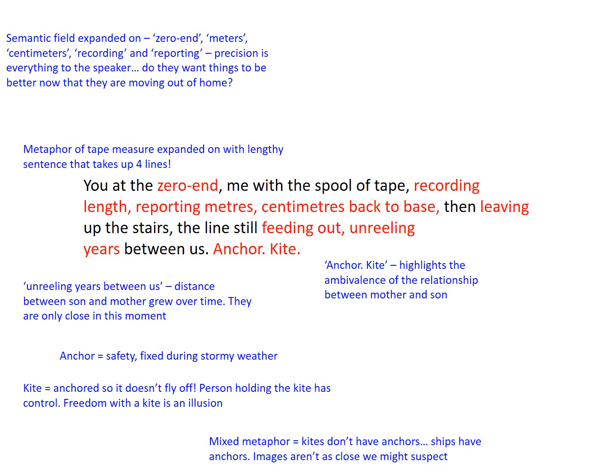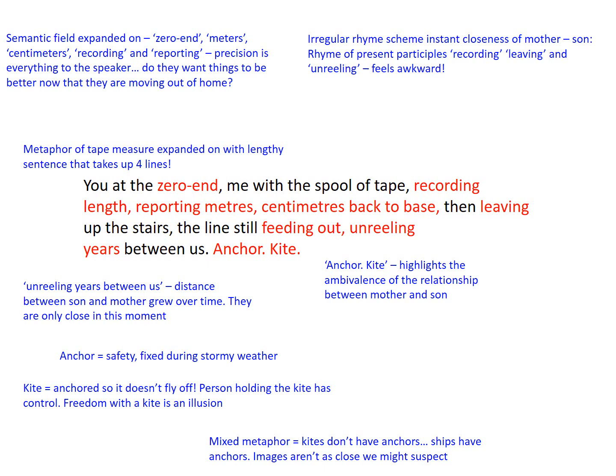There's an irregular rhyme scheme that feels immediately uncomfortable, mirroring the sense that we might presume they're close but they're not. The present participles — 'recording,' 'leaving,' 'unreeling' — feel awkward and clunky, perhaps how their relationship feels too. By the end of stanza two there's discomfort with the double end stop: 'Anchor. Kite.' It's as if the speaker is growing more distant until this abrupt end, contrasting the flowing enjamblement of each line in stanza two against quite brutal full stops in quick succession.